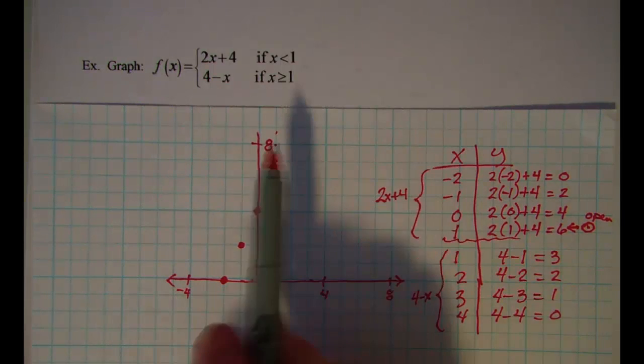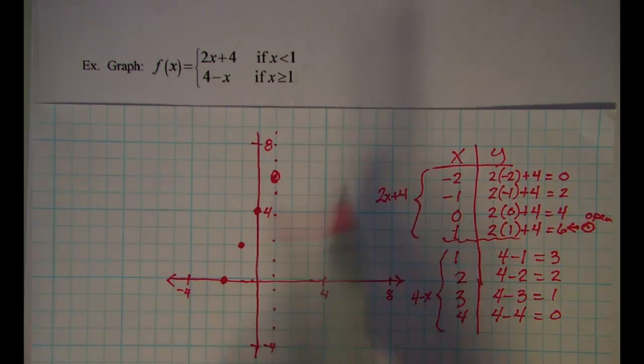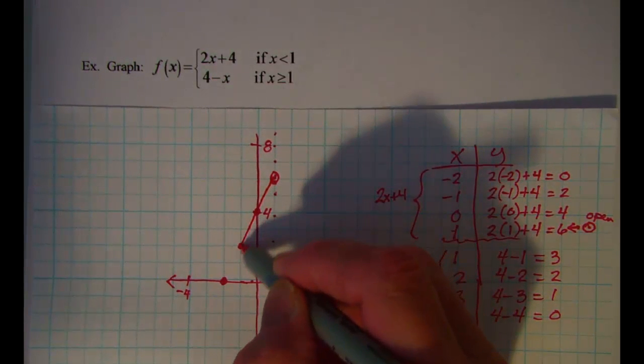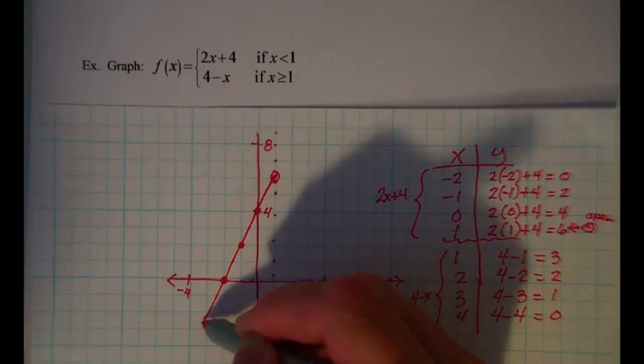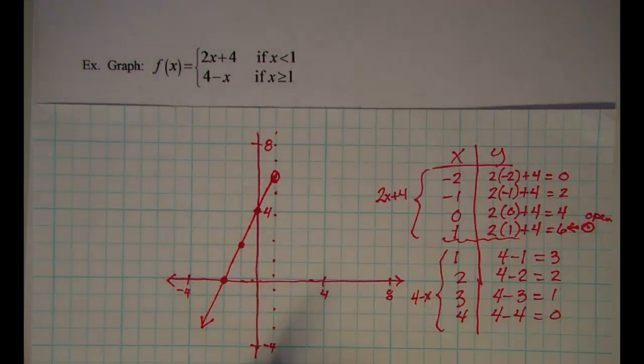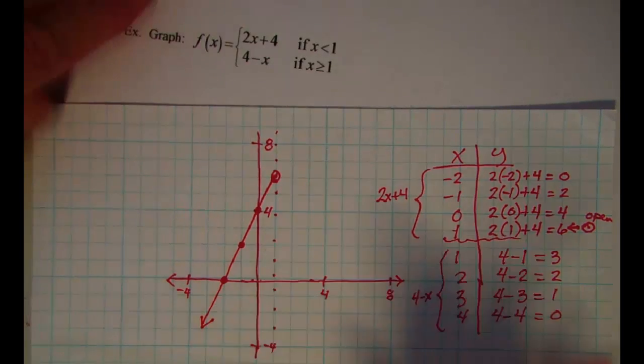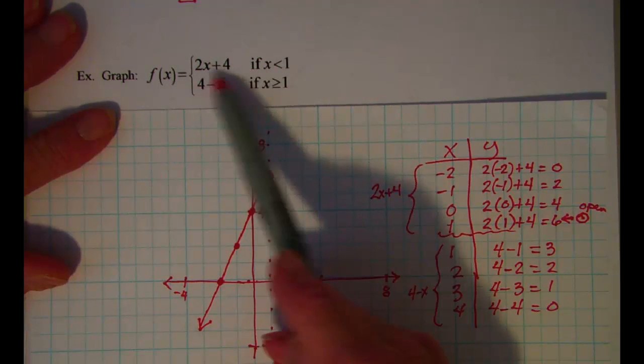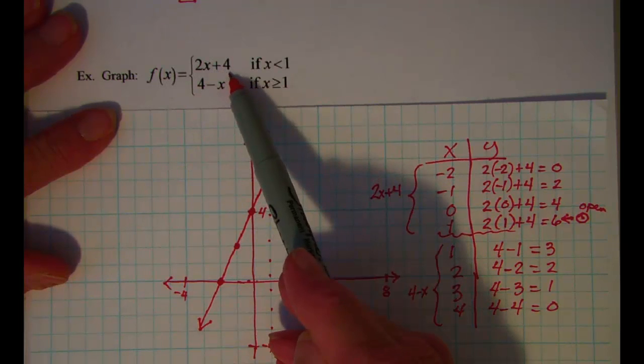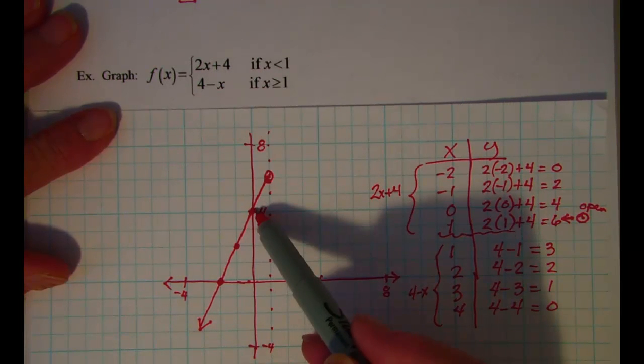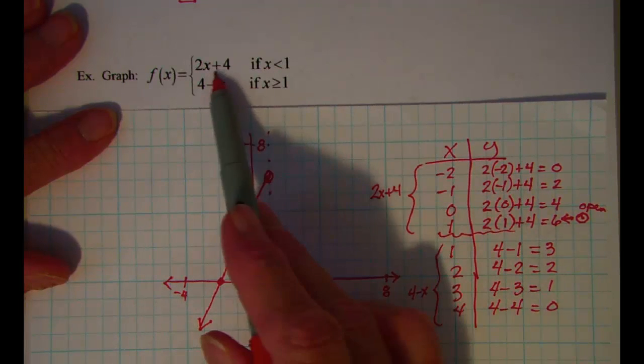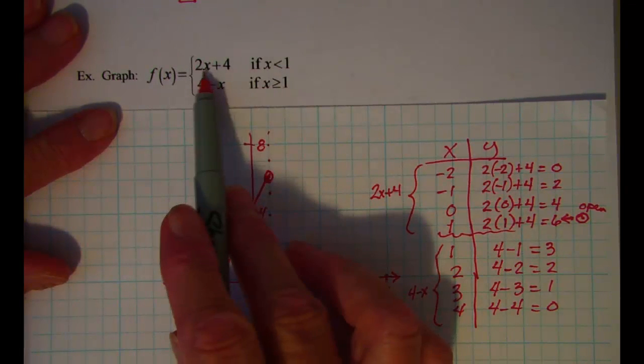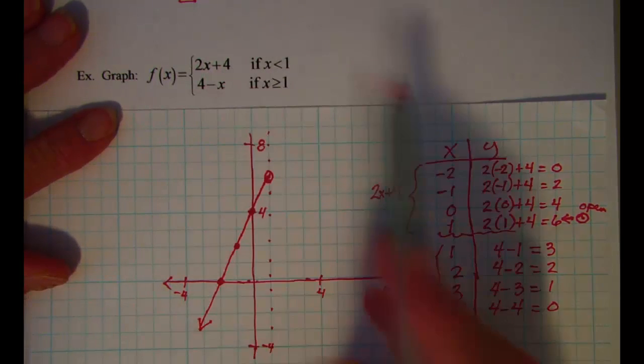So to the left of x equals 1, you can see that I have a linear function. Now you can ask yourself if this makes sense. On this y equals mx plus b, my y-intercept is 4, which, yeah. And my slope is 2, which is up 2 right 1. So that one fits that y equals mx plus b on that one.